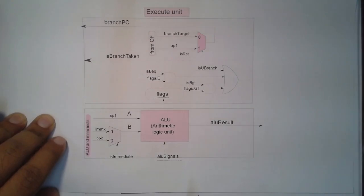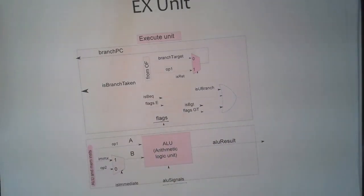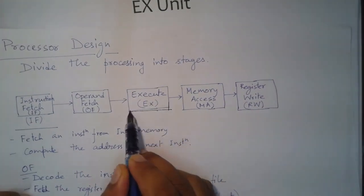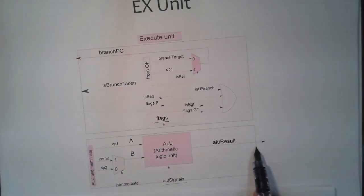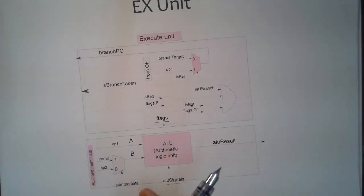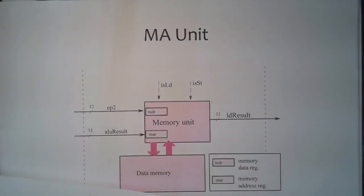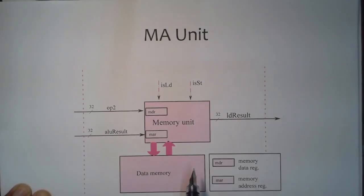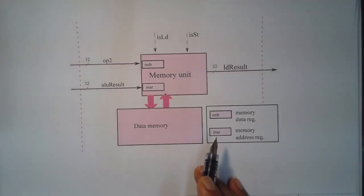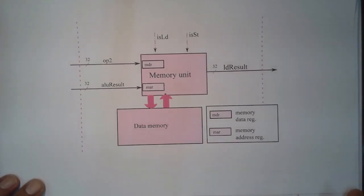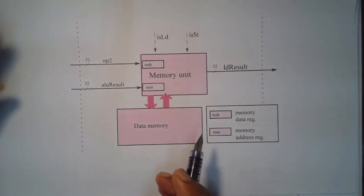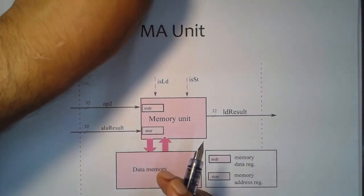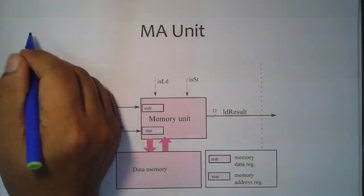We are now done with the execution unit and will move to the memory access unit. The execution unit output is the ALU result, which goes to the next stage. The memory access unit deals with load and store instructions, so let us start with the load instruction first.